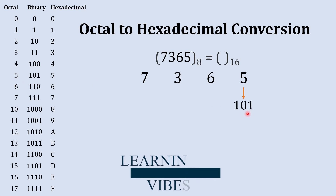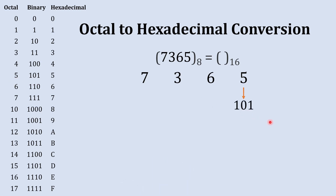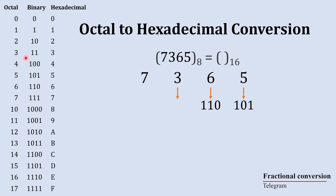So we are going to write 101 here. The next number is six — the binary equivalent to six is 110, so we will write 110 here. The next number is three, and the binary equivalent to three is 11, but we are not going to write 11 here — instead, we'll write 011.